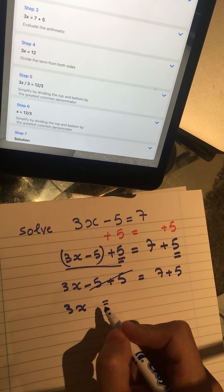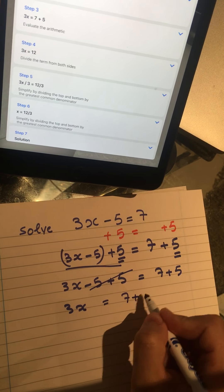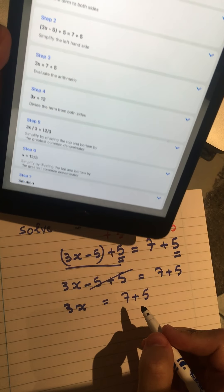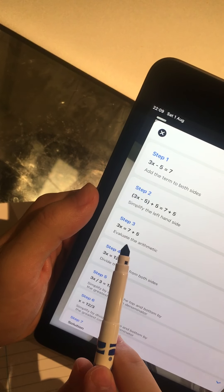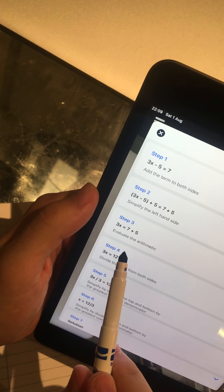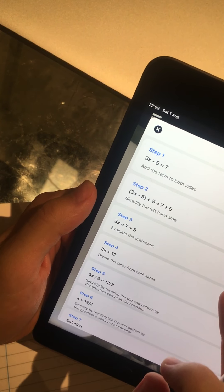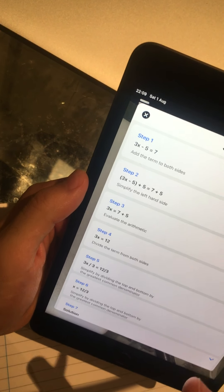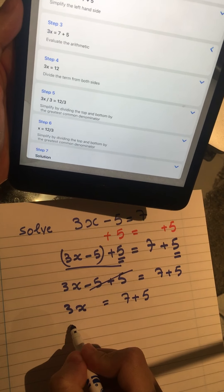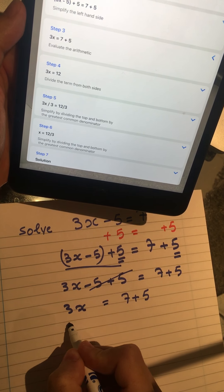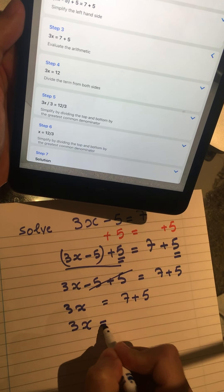Now 7 plus 5, we can evaluate the arithmetic, which is 7 plus 5 will be equal to 12. So now we are in step 3, step 4, 3x equal to 12.